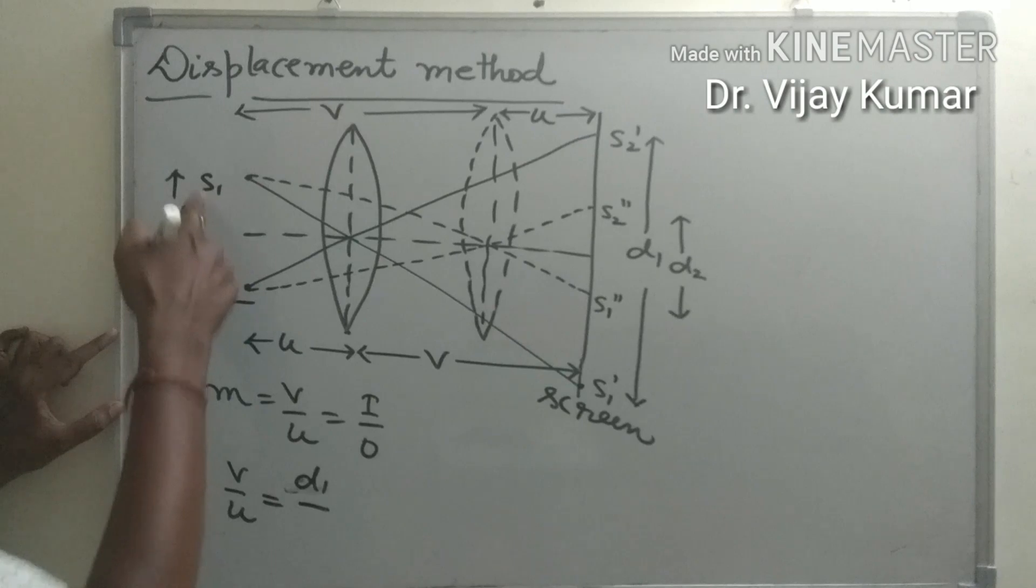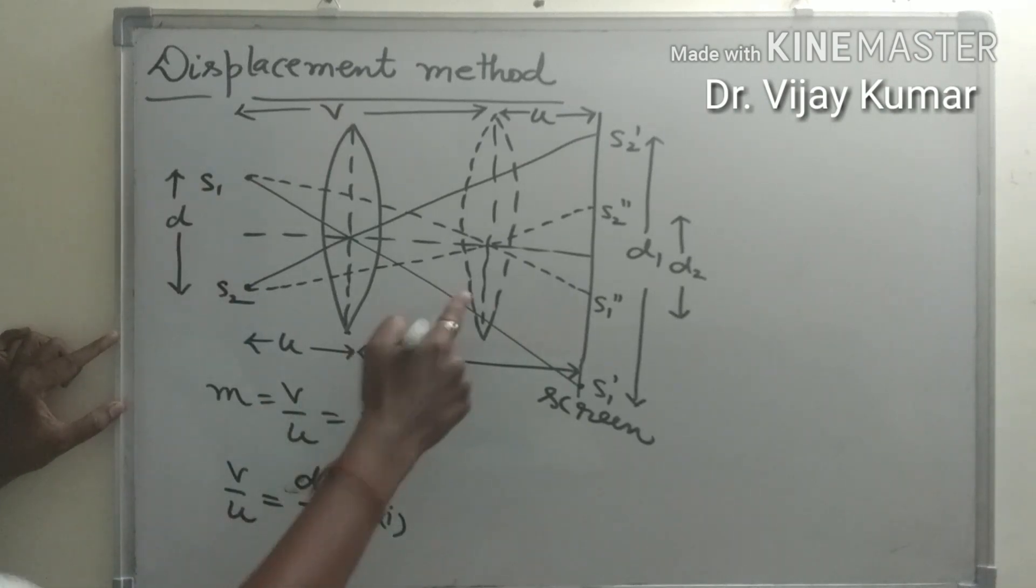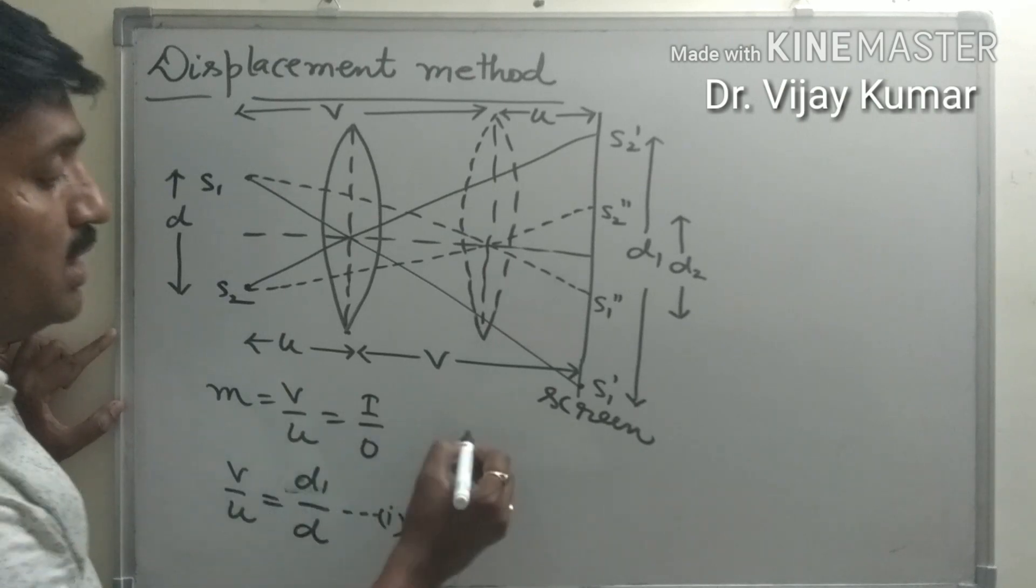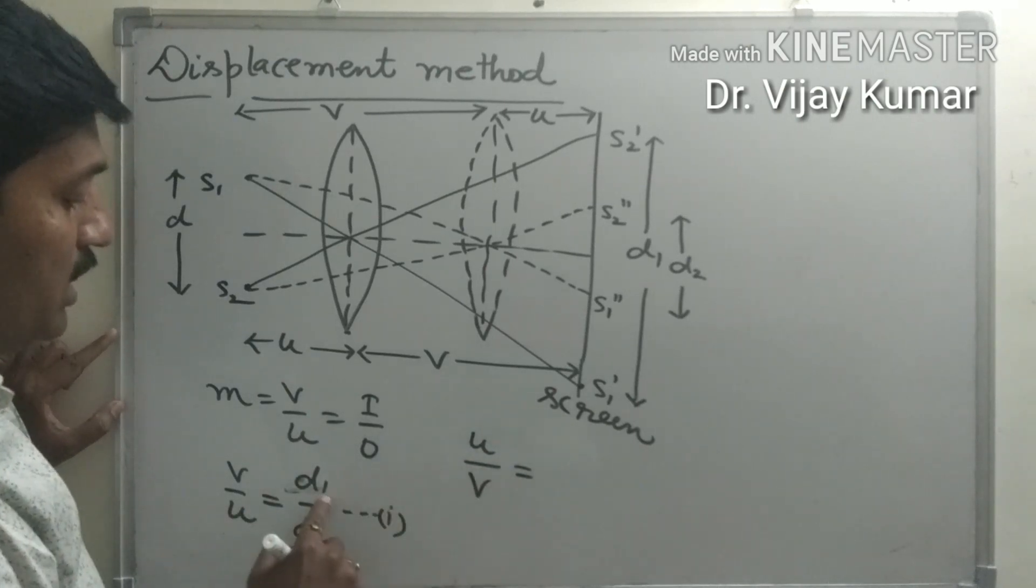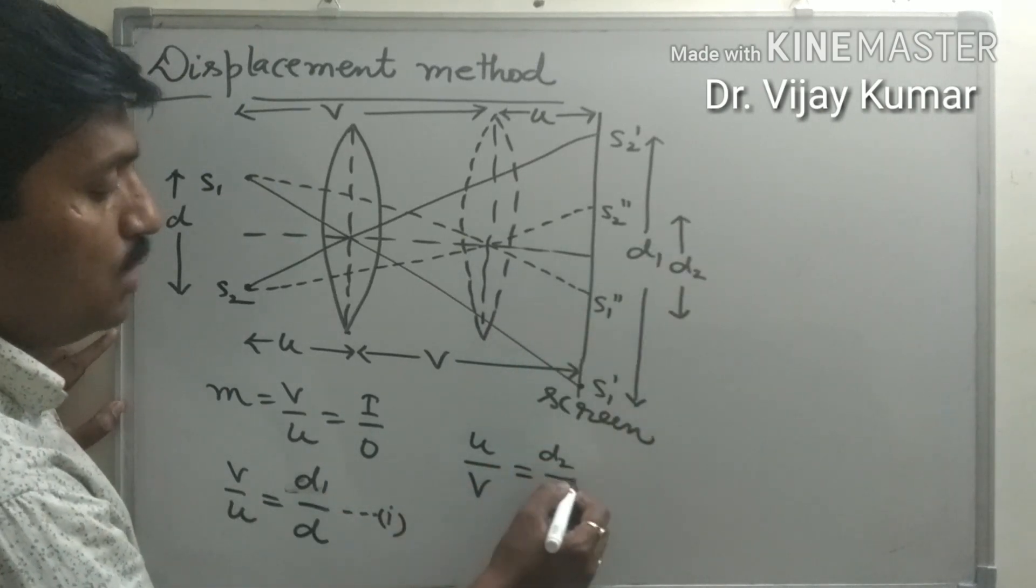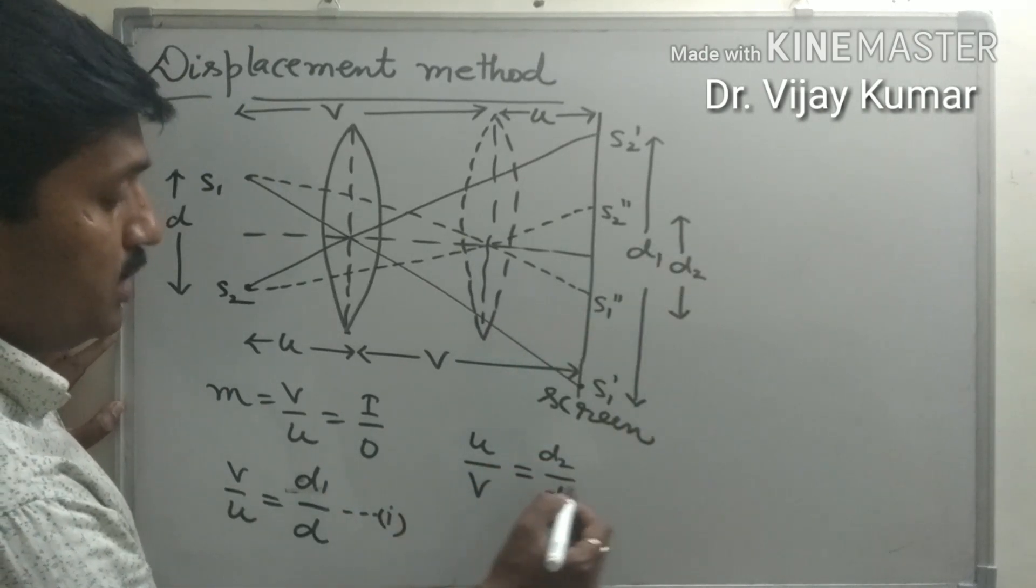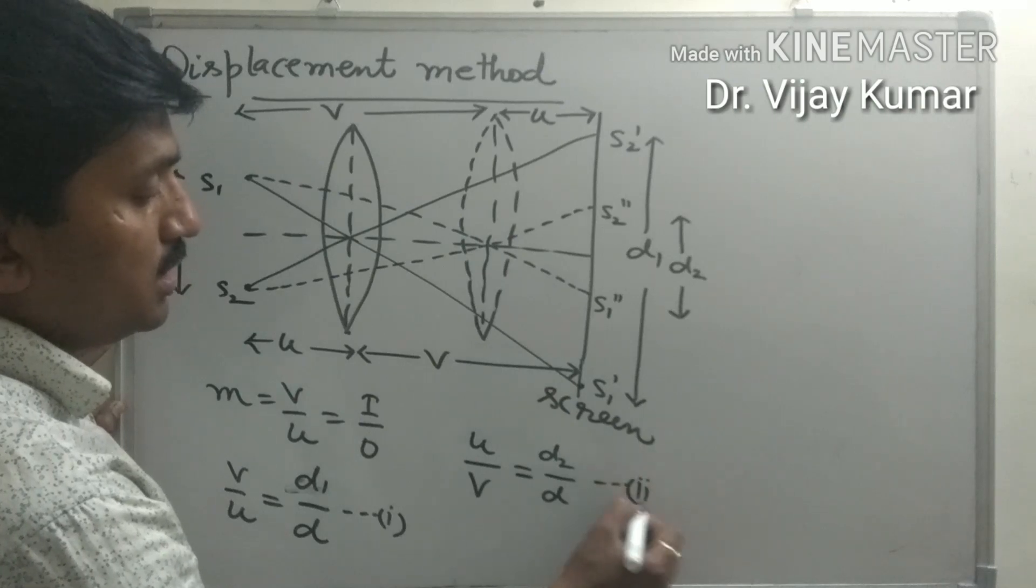upon d. This is equation number 1. In the second position, v is replaced by u and u is replaced by v, and d1 is replaced by d2: u upon v equals d2 upon d. This is equation number 2.